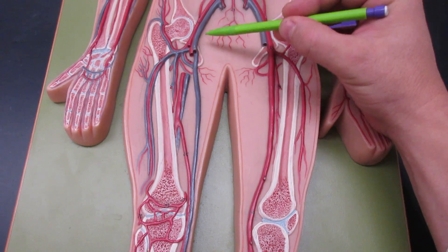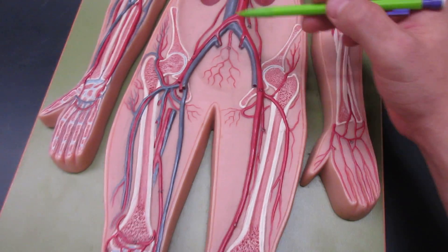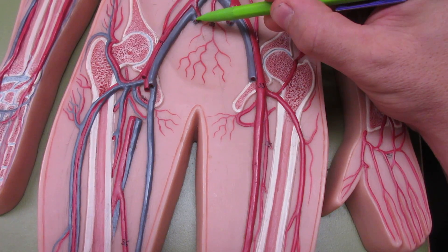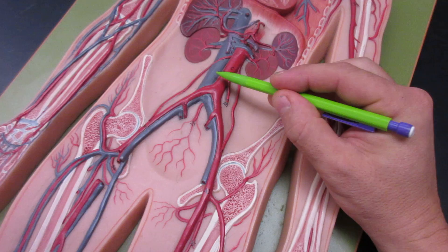But then that's going to converge here and meet up with the external iliac vein here and here. This is the internal iliac, and together they make the common iliac vein. And then right here is the vena cava, so this is the inferior vena cava which continues up.